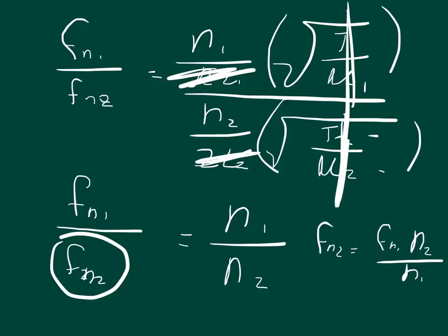Now N2 we said was going to be 3, N1 we said was 6, and then Fn1 it tells us is 637, so 637 times 1 half.